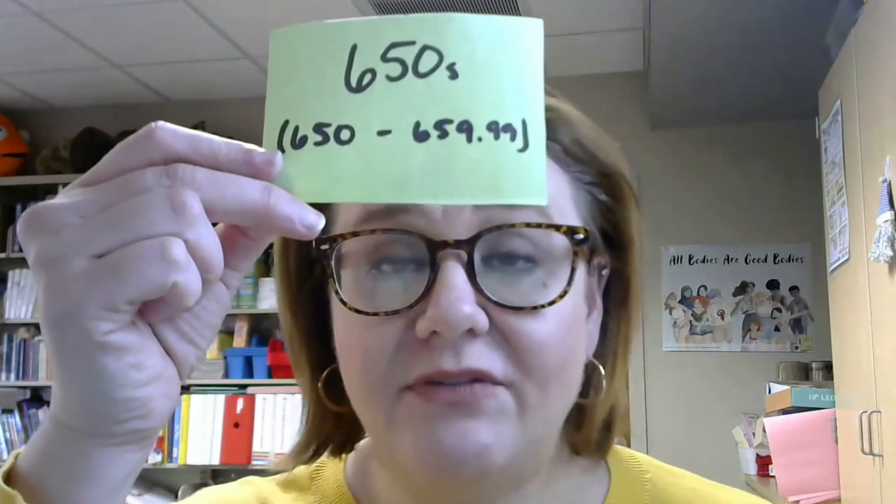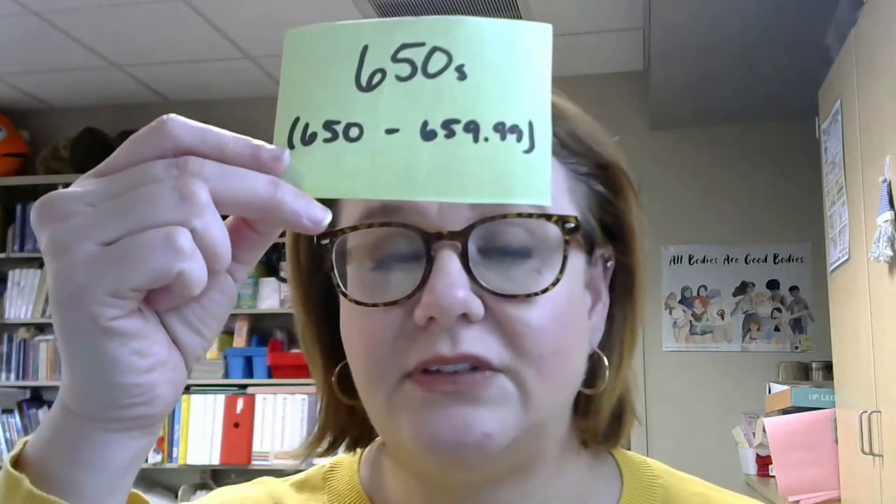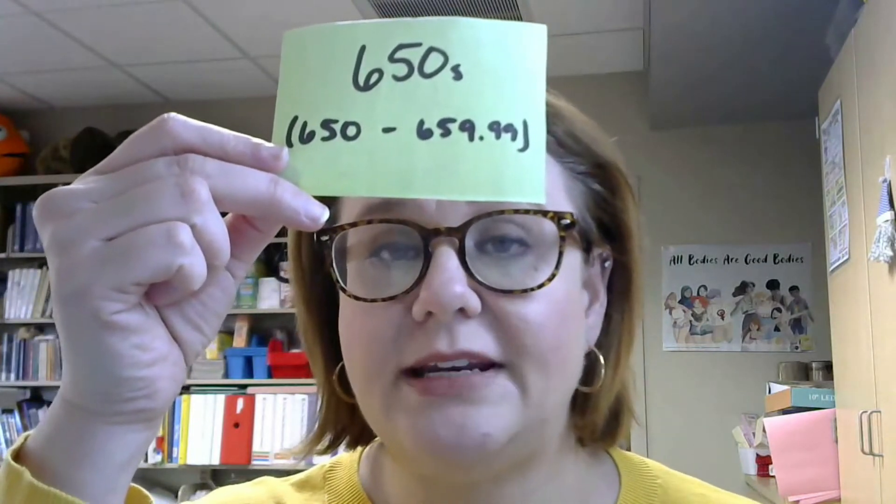Next we have the 650s — that's 650 to 659.99 — and this section covers business management. So what it's like to own a business, how to own and run a business, how to manage different employees, how to manage finances — all of that that is business related would be found there in the 650s.